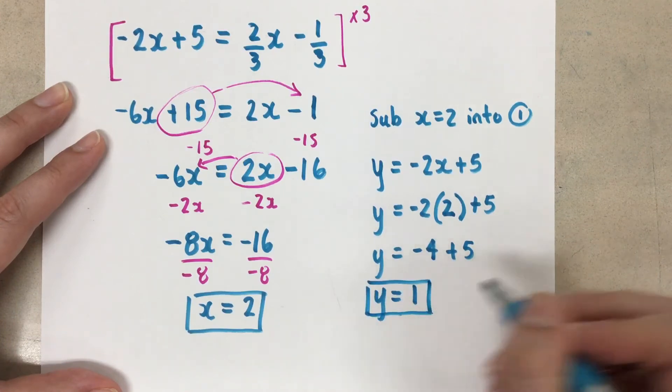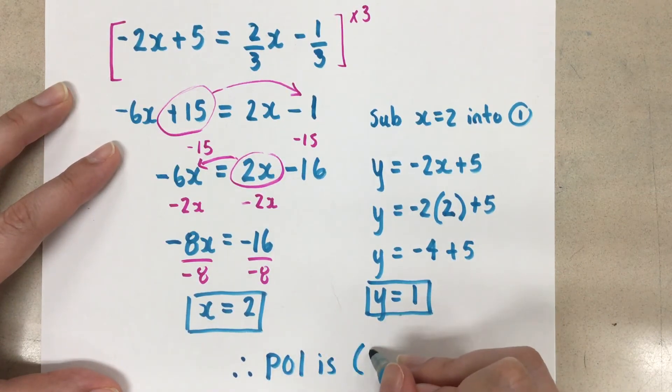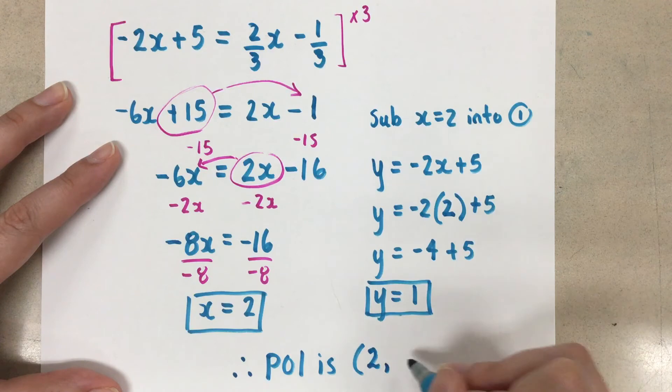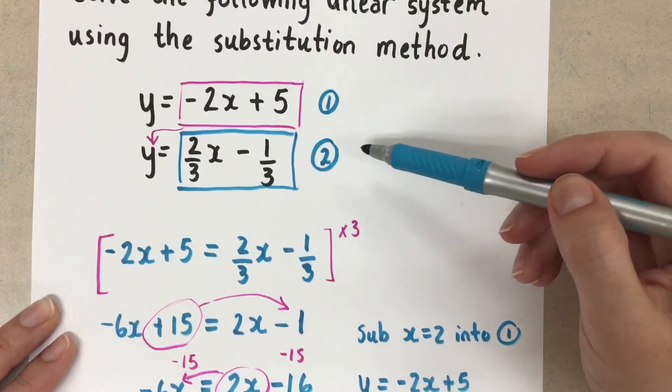So this means the solution to the system, or the point of intersection if you prefer, is x, that was our 2, comma y, which was our 1. And there's our point of intersection for this linear system here.